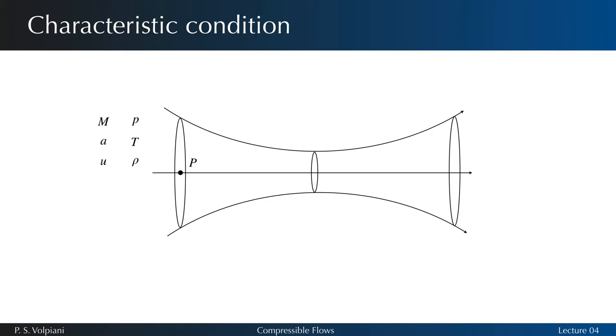The static pressure, temperature, and density are denoted p, T, and rho respectively. Now imagine that the fluid element is adiabatically slowed down if the Mach number is greater than 1, or sped up if the Mach number is less than 1, until the Mach number reaches the sonic state.